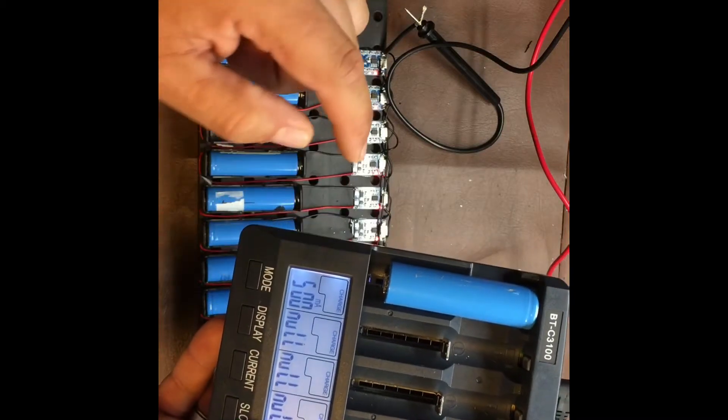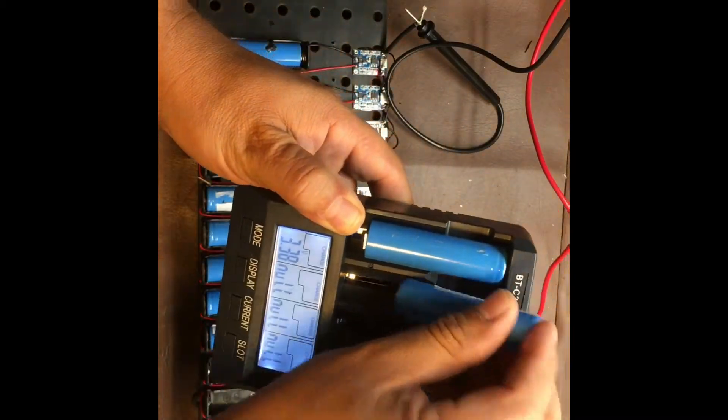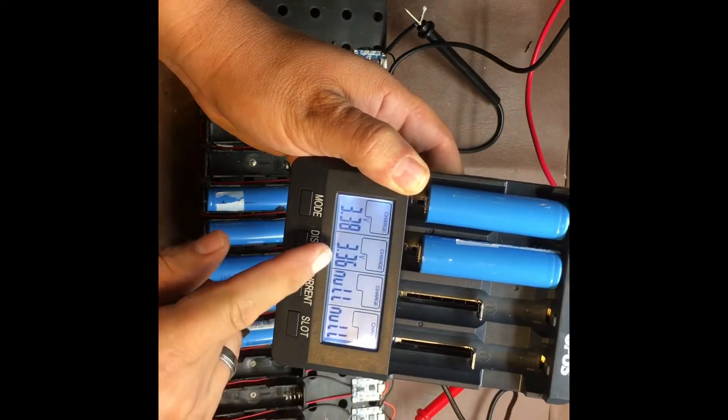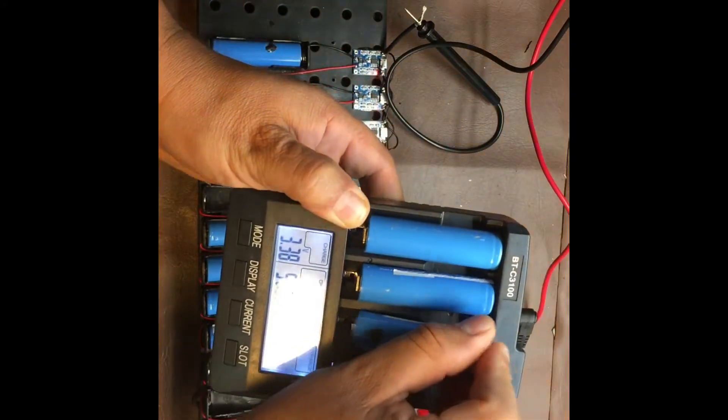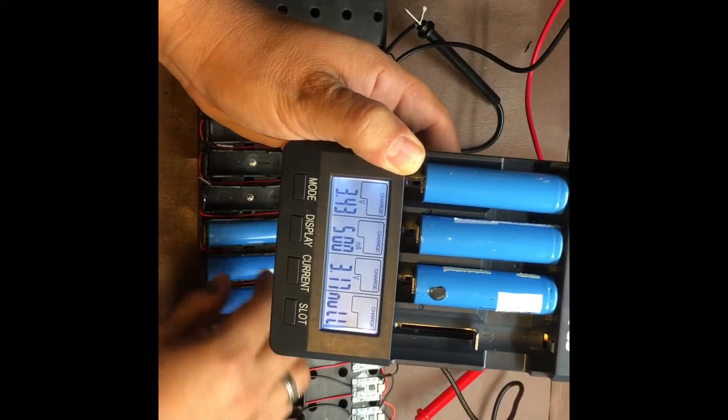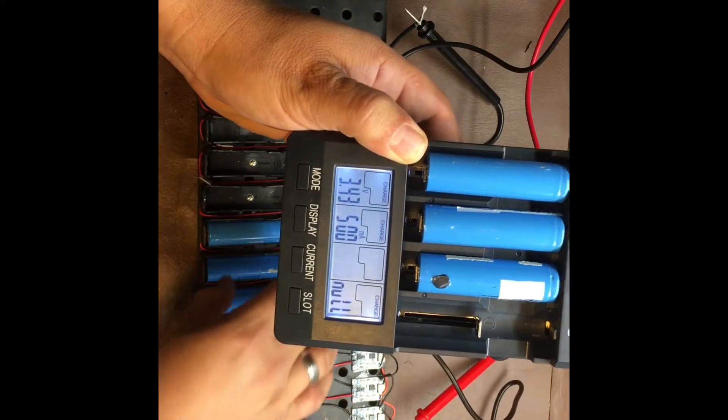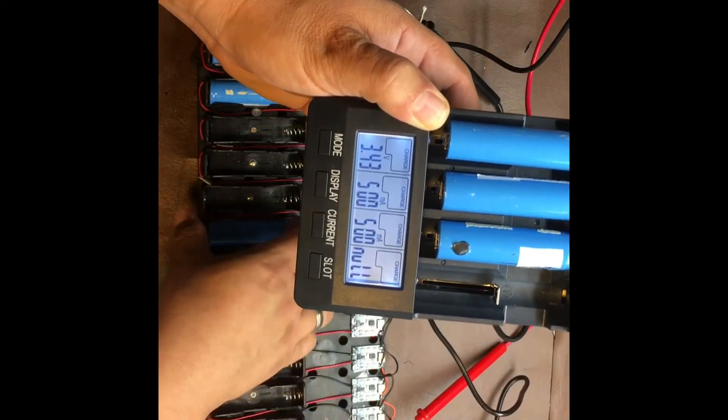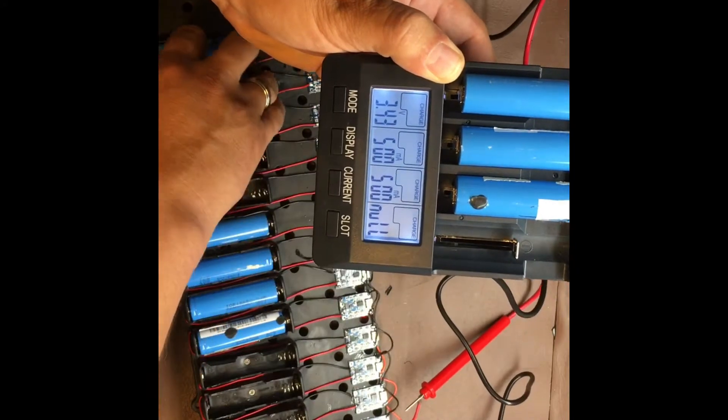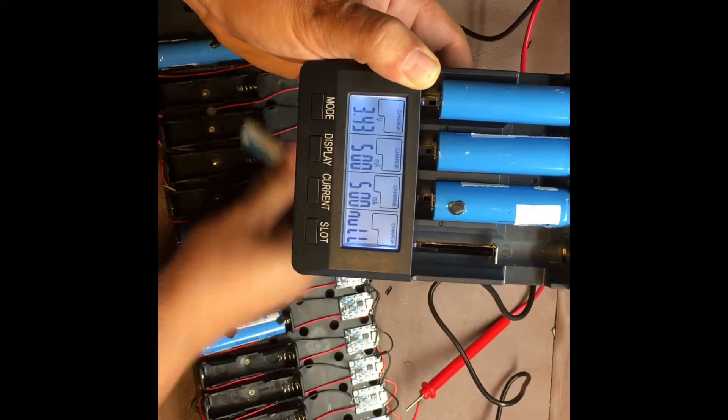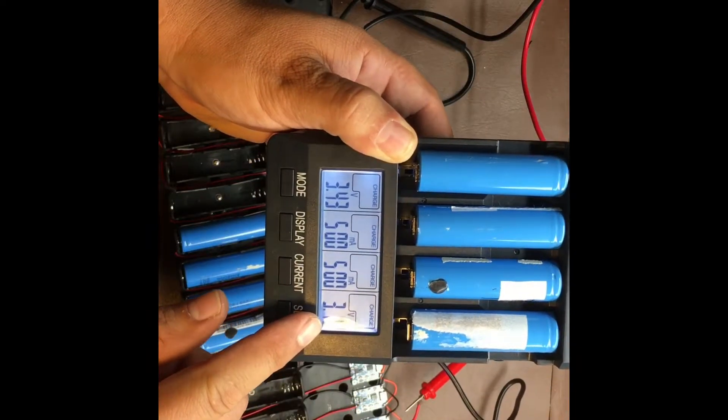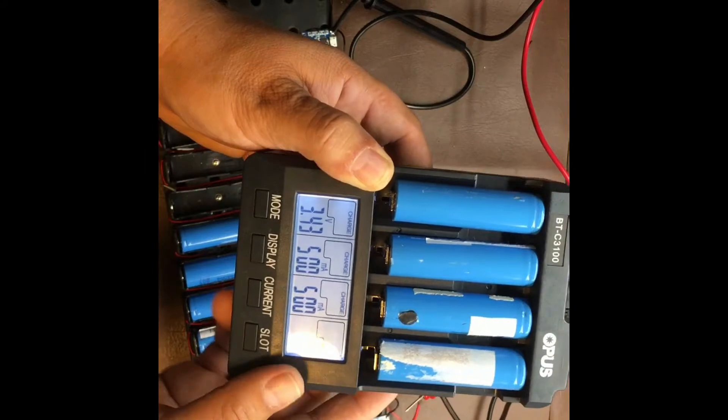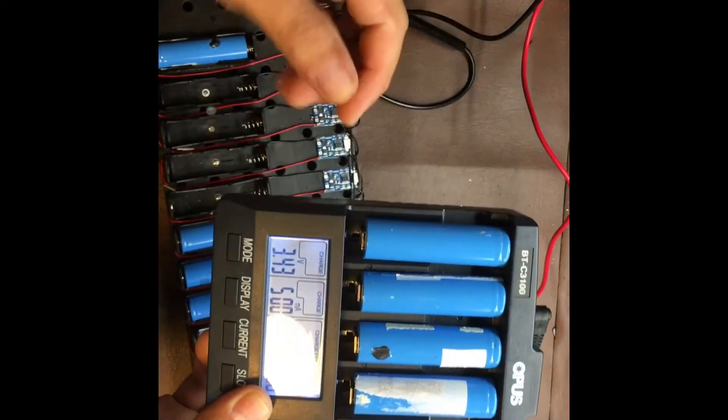Now it's 3.38 volts, so right away it starts charging. Let's try the second one—3.36 volts. Third one—3.18, starts charging. The last one, 3.18. So now this machine, this charger, starts reading all these dead batteries. I mean they were dead, but now they got resurrected.